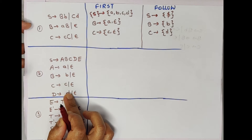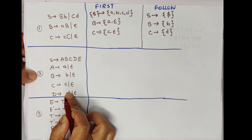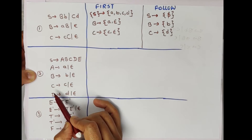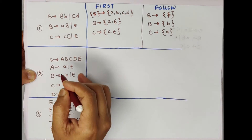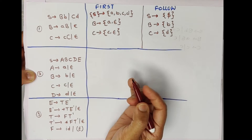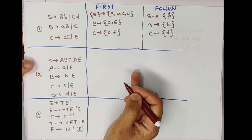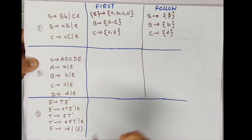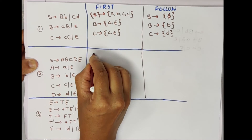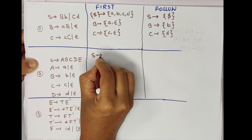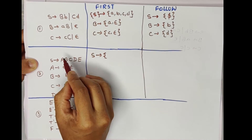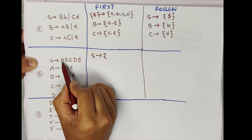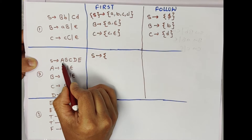Now one more example. In this grammar there are 5 variables and some terminals: A, B, C, D are the terminals. We will again find out FIRST and FOLLOW for this example. S is the starting symbol, and S → A B C D E.